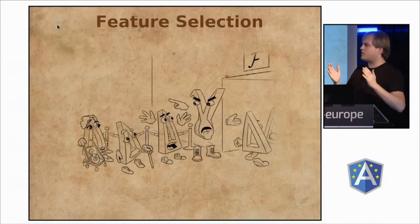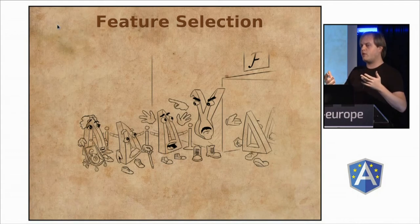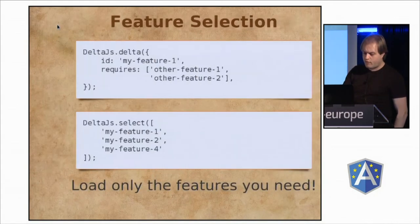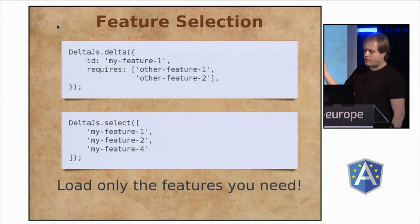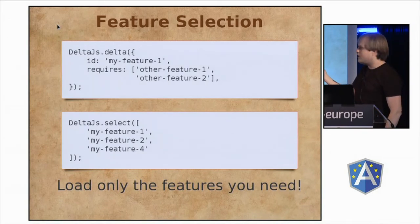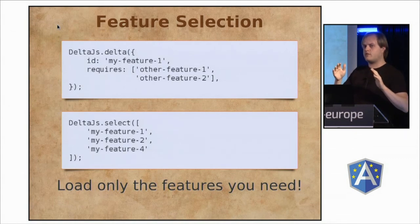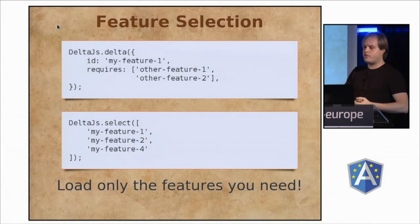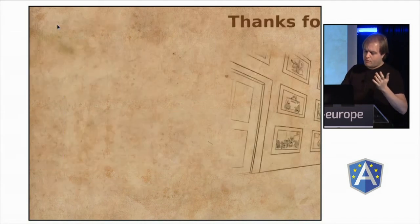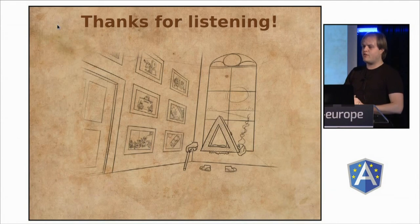Finally, there's feature selection. Software product lines — this is where this formalism comes from. You can turn features on and off by selecting features in the code. If you write your deltas well, they will work with any combination basically. So load only the features you need. That's basically it. Thanks a lot for listening.